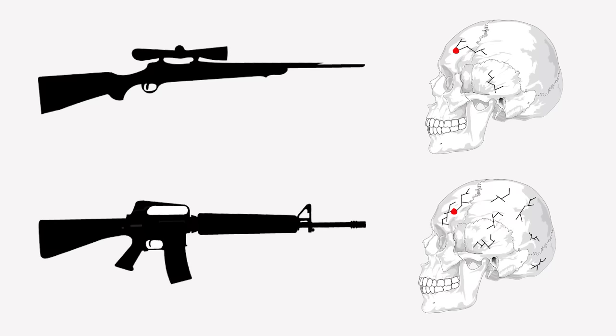The higher power the firearm, the more secondary fracturing of the skull, especially at more thick and hard locations, like the front and back.